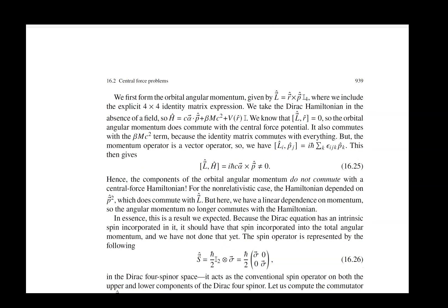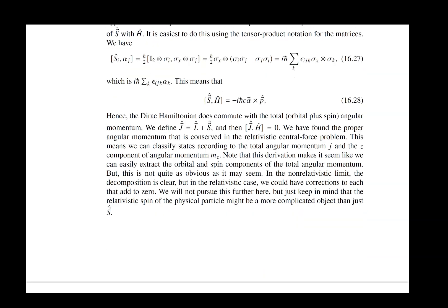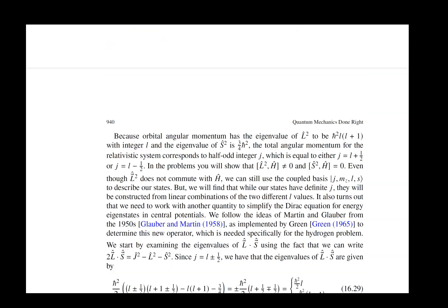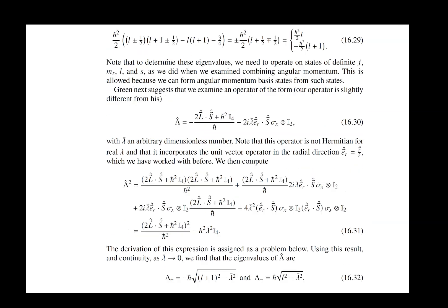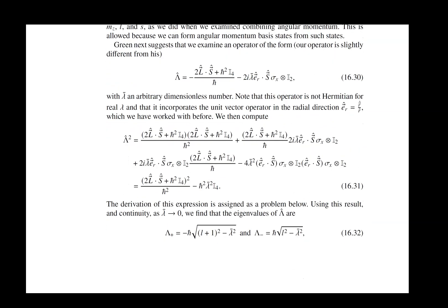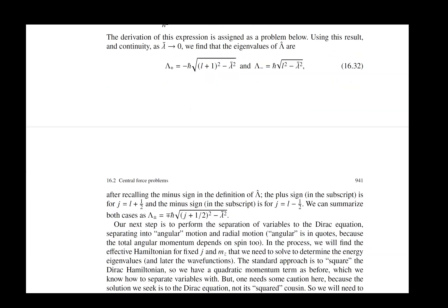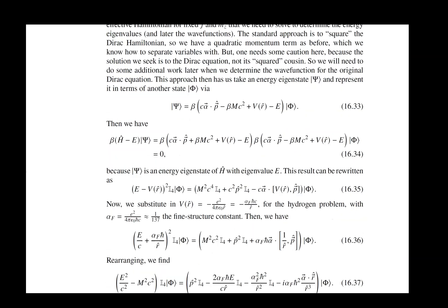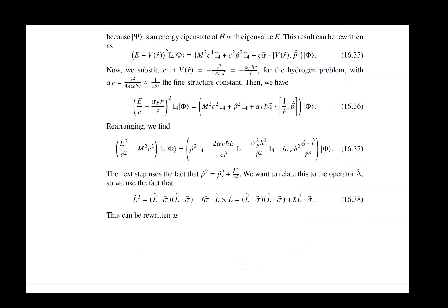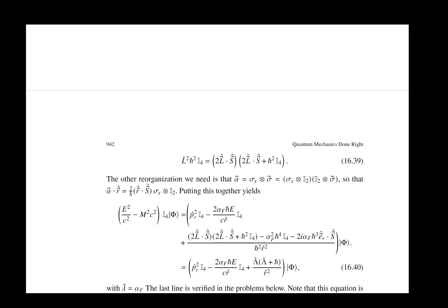Then we look at what happens when we look at central force problems. In particular, we want to look at total angular momentum, because it turns out that the orbital angular momentum no longer is conserved by the Hamiltonian. But interestingly, the total angular momentum, the spin plus orbital angular momentum, is conserved by the Hamiltonian.